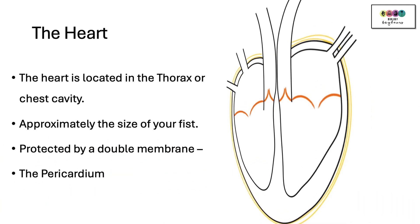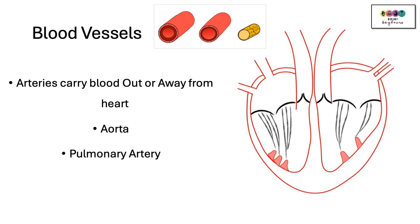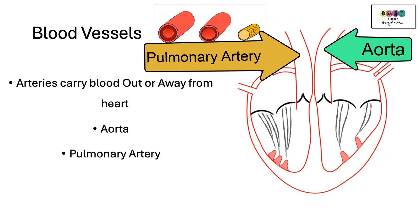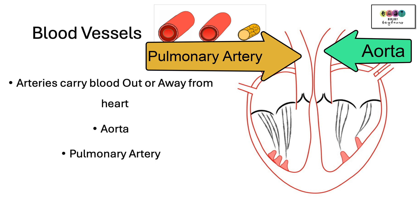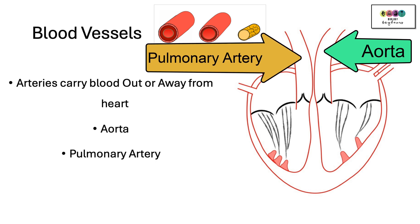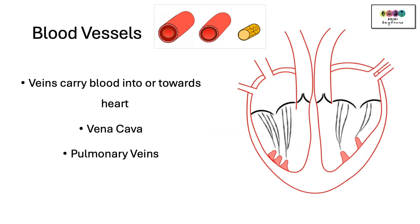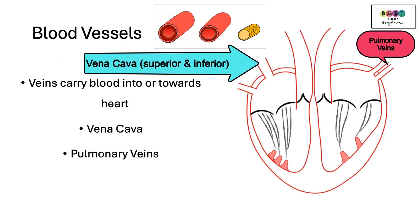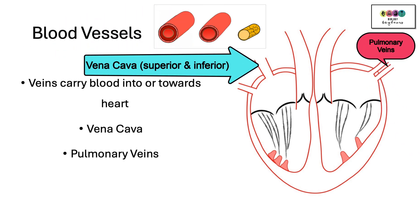It's very important that you can label the blood vessels leading into and out of the heart. Remember, arteries carry blood out or away from the heart, so the aorta and the pulmonary artery are the two arteries that lead out of the heart. Veins carry blood into or towards the heart — the vena cava and the pulmonary veins are the veins that lead into the heart.